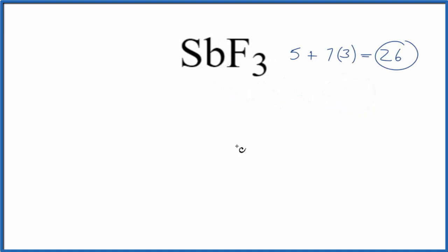We'll start by putting the least electronegative element in the center of the Lewis structure. That's going to be the antimony, Sb, and then we'll put the fluorine on the outside.